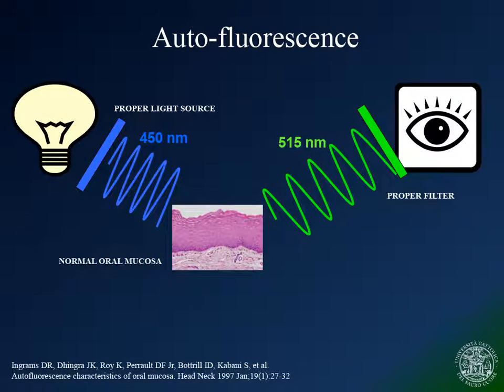Autofluorescence of the oral mucosa consists of a pale light coming from oxidized flavin adenine dinucleotide and other fluorophores when excited by blue-violet and ultraviolet light. Healthy tissues produce a 515 nm wavelength green light.